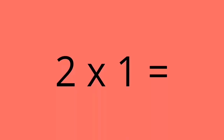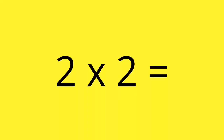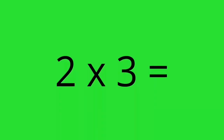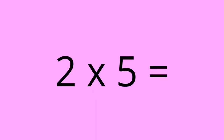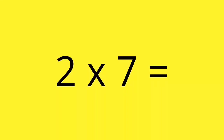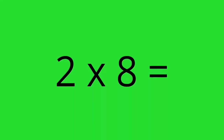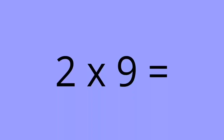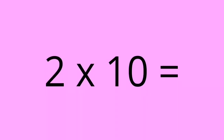2 times 1 equals 2. 2 times 2 equals 4. 2 times 3 equals 6. 2 times 4 equals 8. 2 times 5 equals 10. 2 times 6 equals 12. 2 times 7 equals 14. 2 times 8 equals 16. 2 times 9 equals 18. 2 times 10 equals 20.